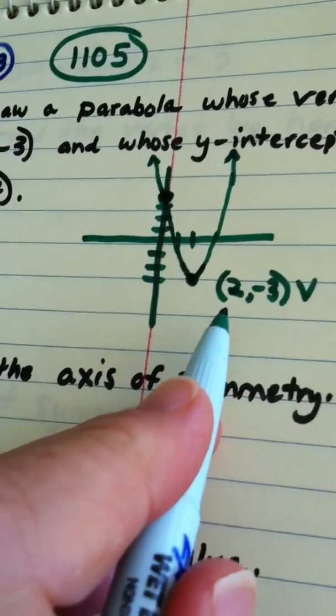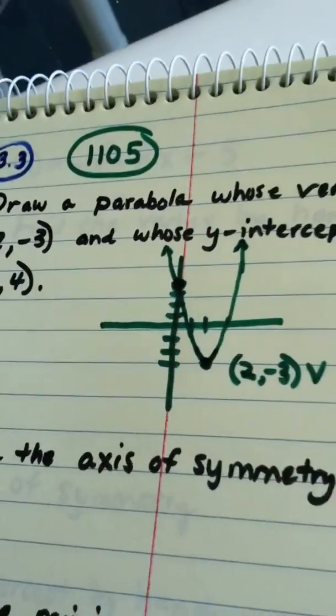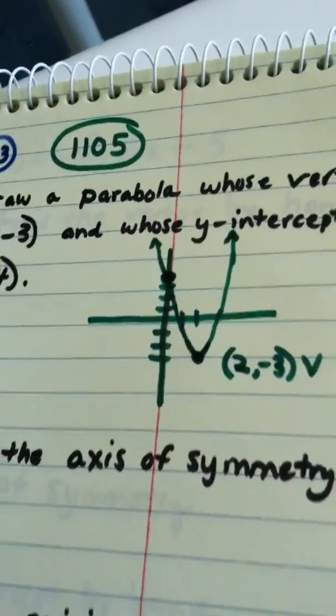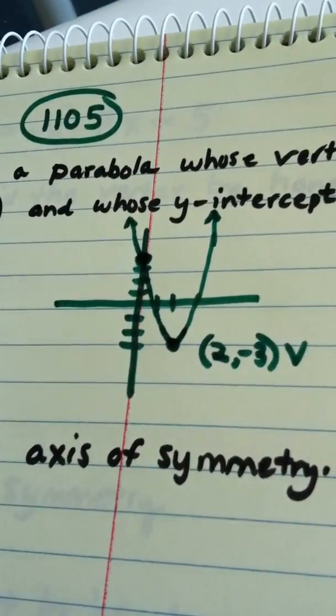My vertex is the ordered pair 2, negative 3. My y-intercept is 0, 4. Remember, every parabola has a vertex, and every parabola has a y-intercept. Now, this one happens to have x-intercepts as well, but not all parabolas do.